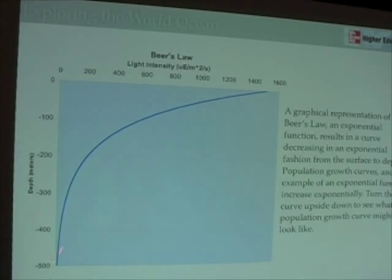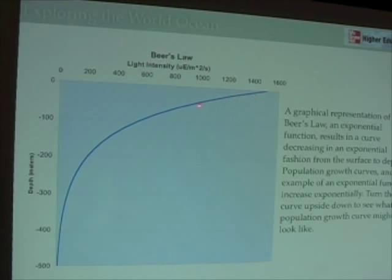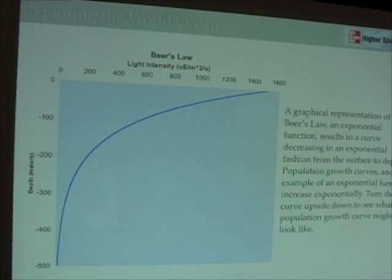This particular graph is unusual because it shows light going all the way down to 500 meters, which is extremely deep for most light. For the most part, the upper 100 meters are the lighted portions of the world ocean. This graph is a representation of Beer's Law — the exponential decrease in light with depth. Light intensity starts out at 1,500 microeinsteins per meter squared per second at the surface and approaches near zero at the bottom.